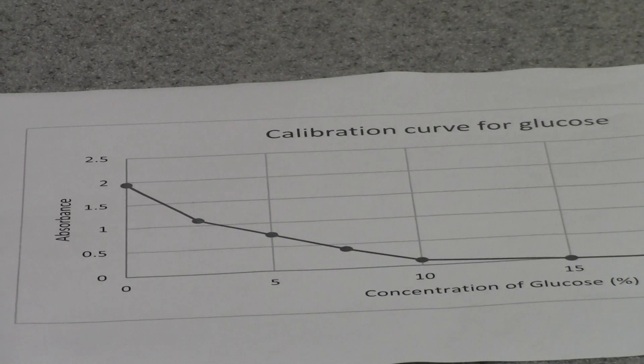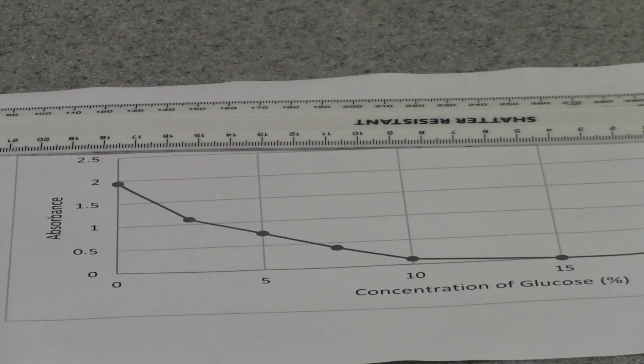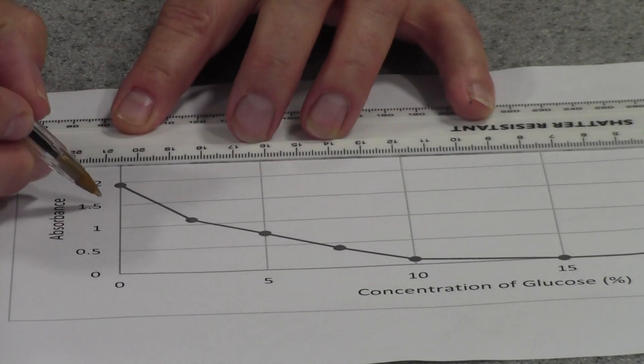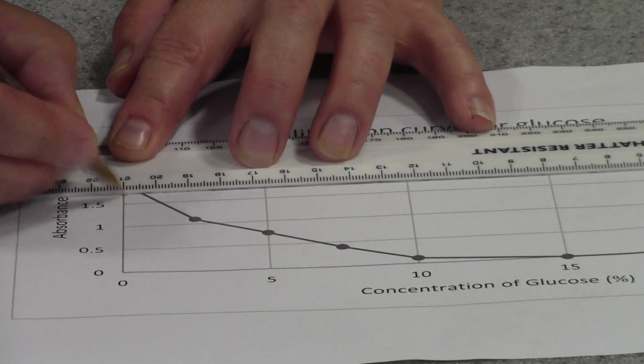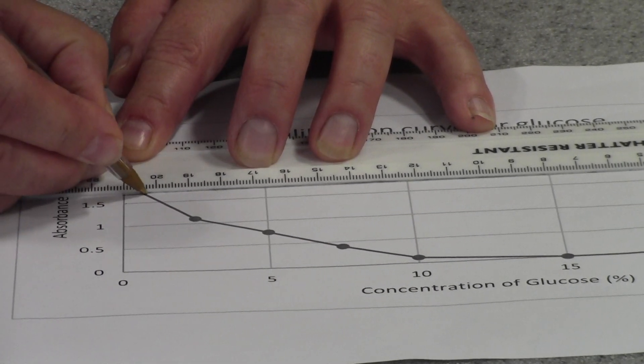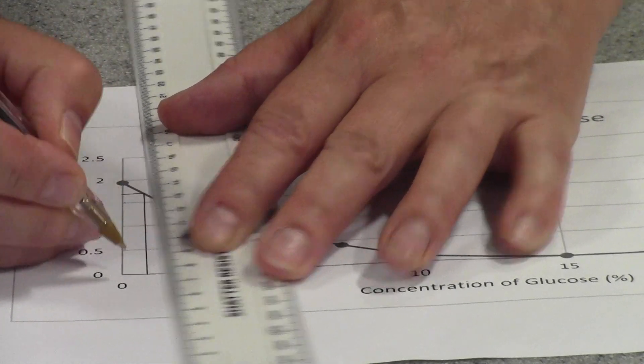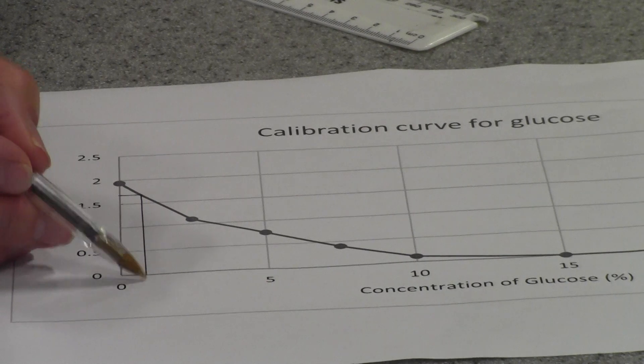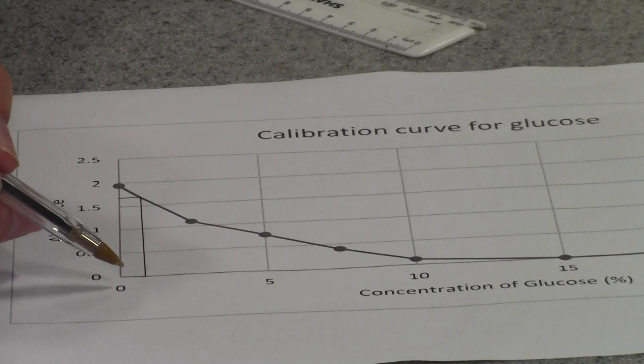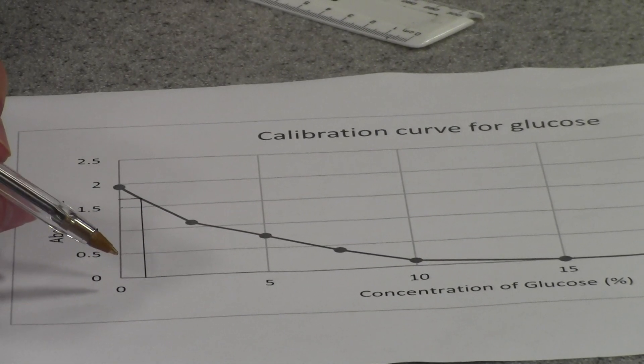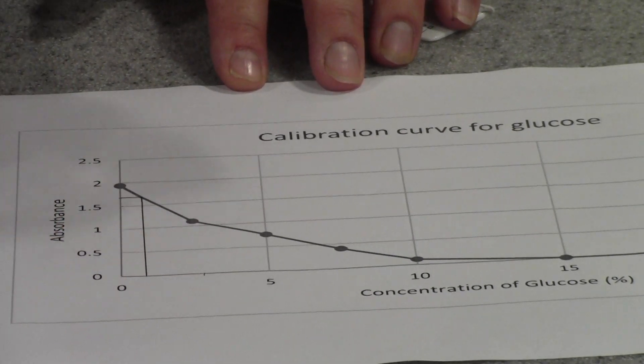All I need to do now is take my ruler and a pen. We've got 1.5 there, so there would be an absorbance of 1.75. If I draw a line across there and down to the x-axis, I can actually read off the concentration of glucose in the sports drink—or actually it could be any reducing sugar that will react with the Benedict's. In this case, that would be slightly less than 1%.